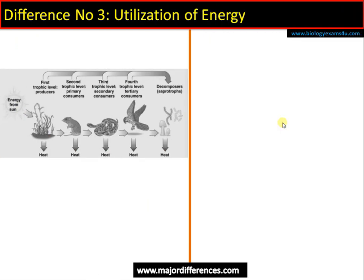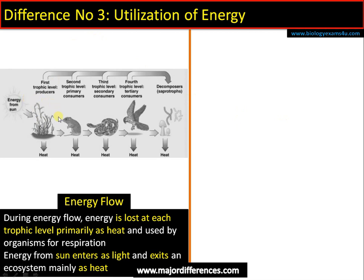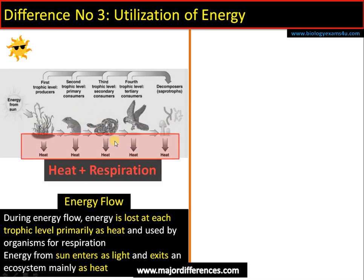Difference number three regards the utilization of energy. During energy flow, energy is lost at each trophic level as heat and used by respiration of those organisms. According to the 10% law, only 10% of energy is transferred from the first trophic level to the second; 90% is lost as heat or used by green plants for their respiration. Energy from the sun enters as light energy and exits the ecosystem primarily as heat.